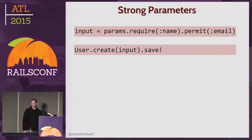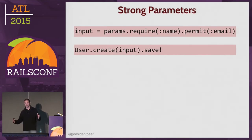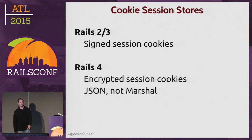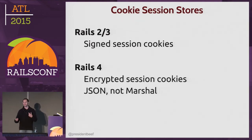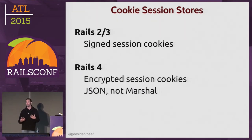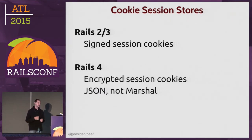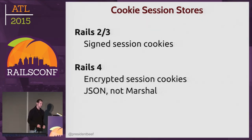Rails by default uses a cookie session store, which means all your session data goes into a cookie. In Rails 2 and 3 that was a signed session cookie — it used a secret value to sign it so you couldn't arbitrarily change values. Rails 4 switched to encrypted session cookies, which is also a good move, and they switched to using JSON instead of Marshal. Again, we're moving in the right direction.